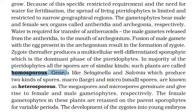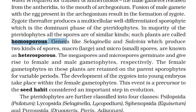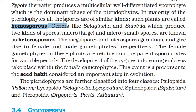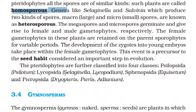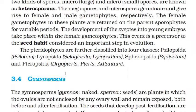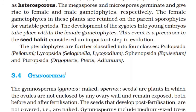Megaspores and microspores germinate and give rise to female and male gametophytes respectively. Female gametophytes are retained in the parent sporophyte for variable periods, and development of the zygote into a young embryo takes place within the female gametophyte. This event is considered a precursor to the seed habit and an important step in evolution.